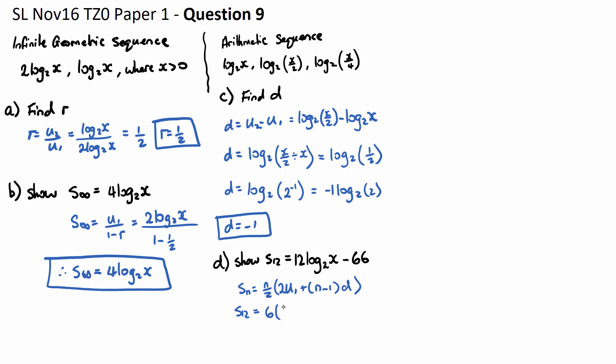2 times u₁ will just be 2 log base 2 of x, plus n which is 12 minus 1, which is 11, multiplied by our difference, which is negative 1.